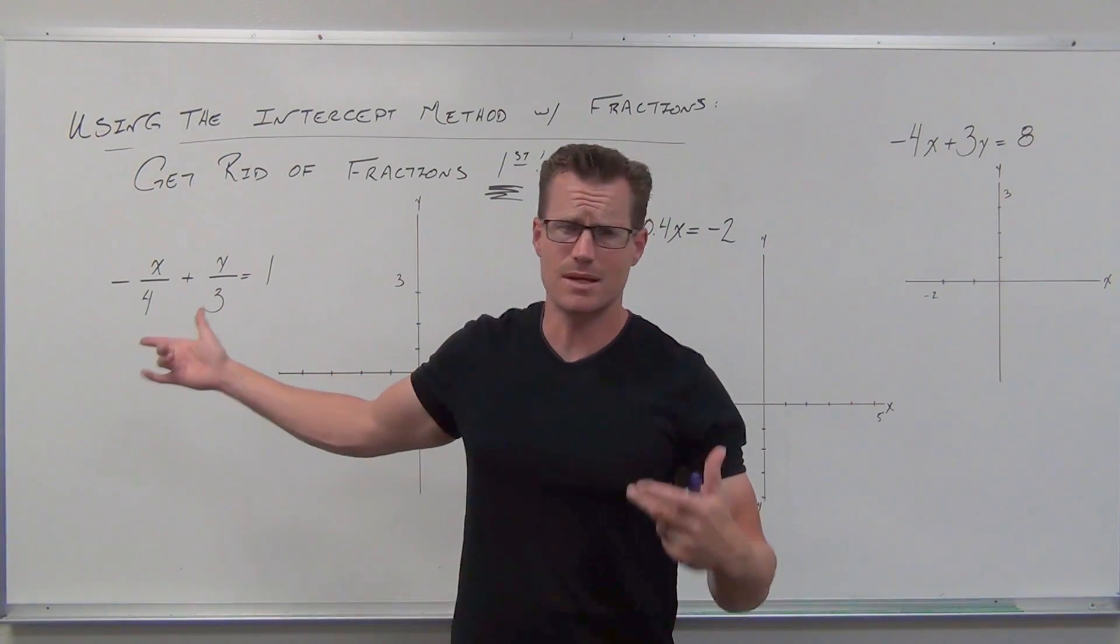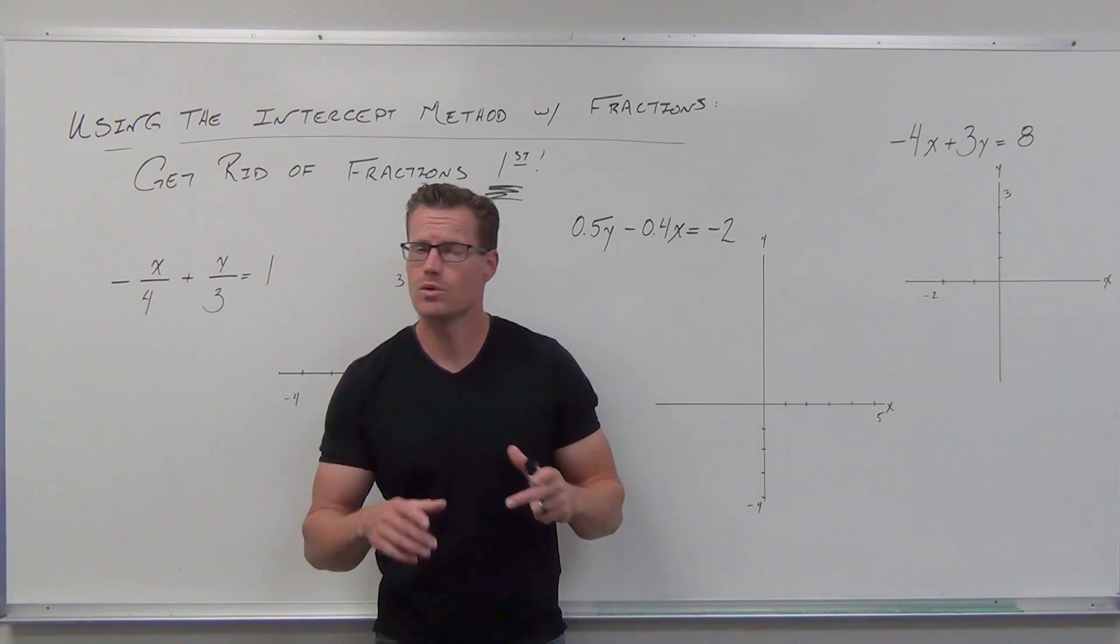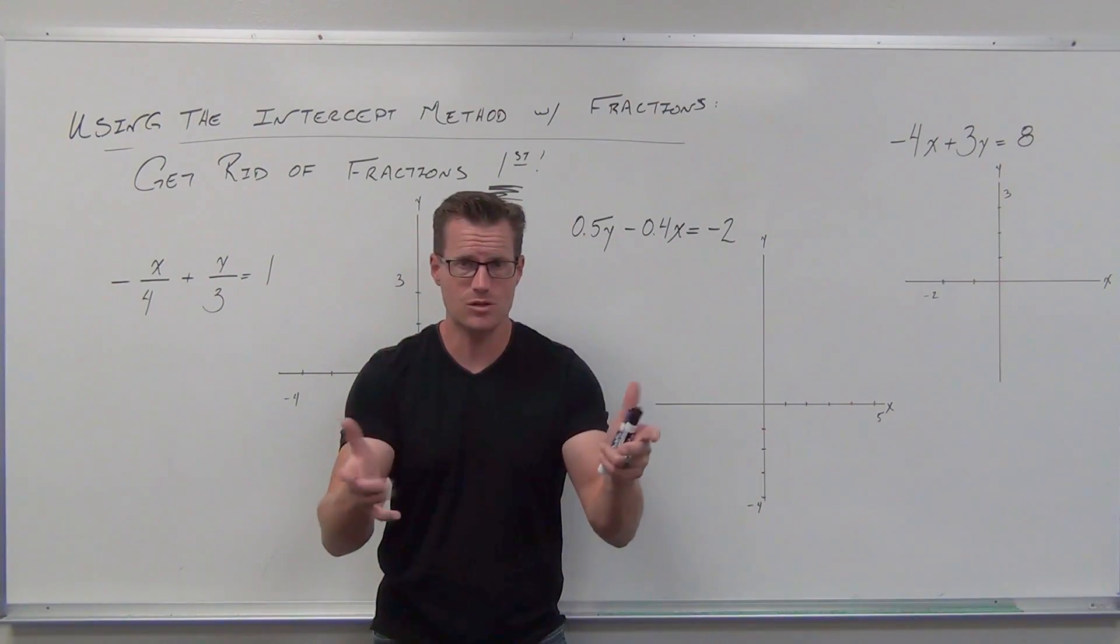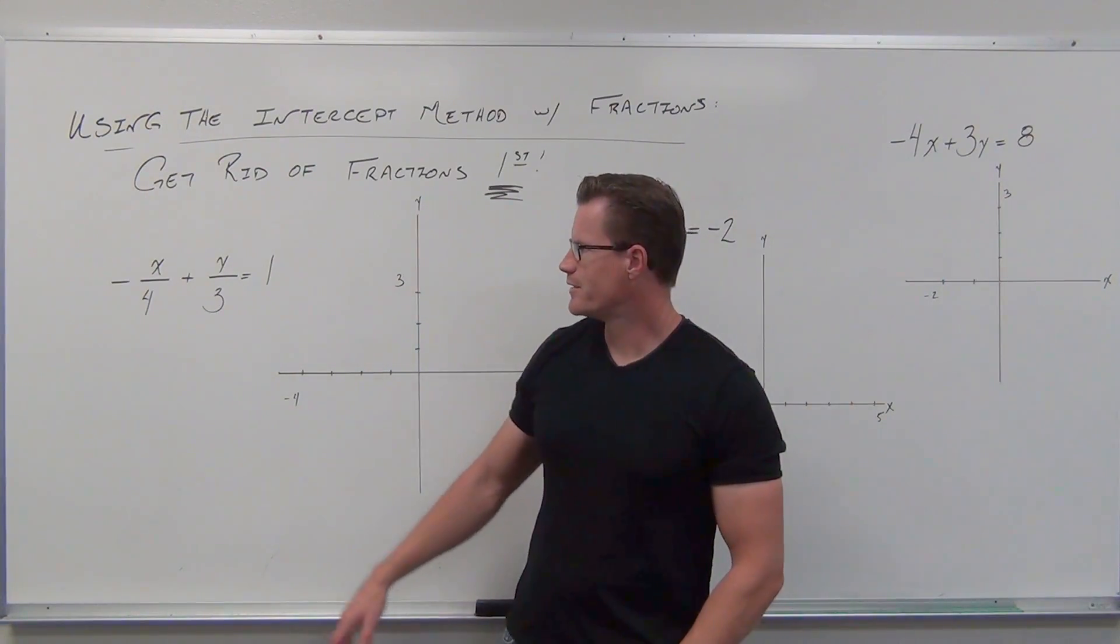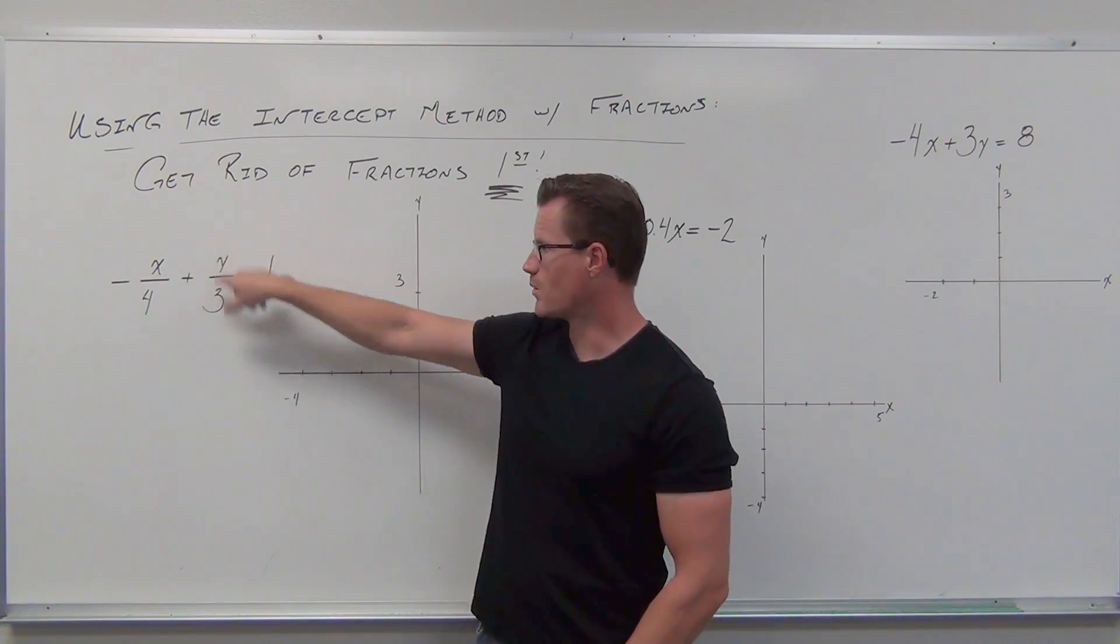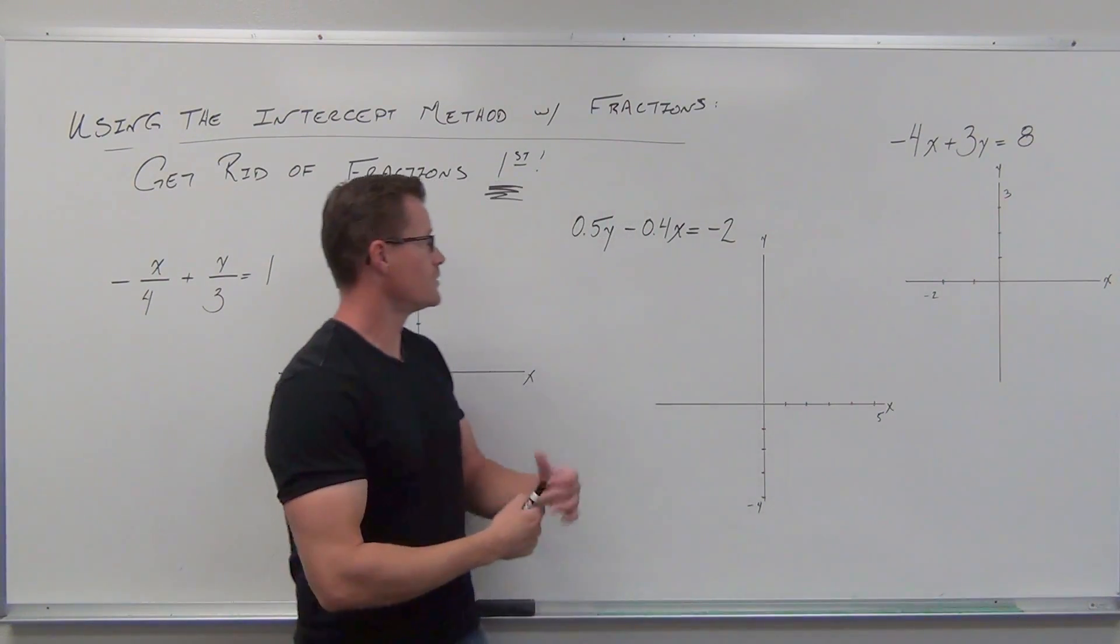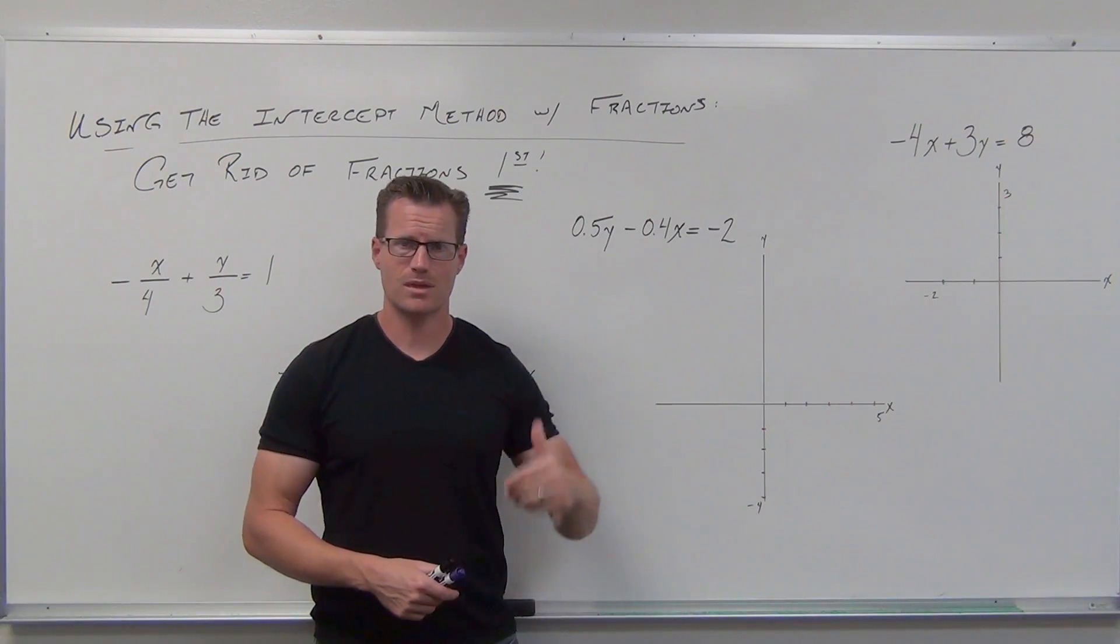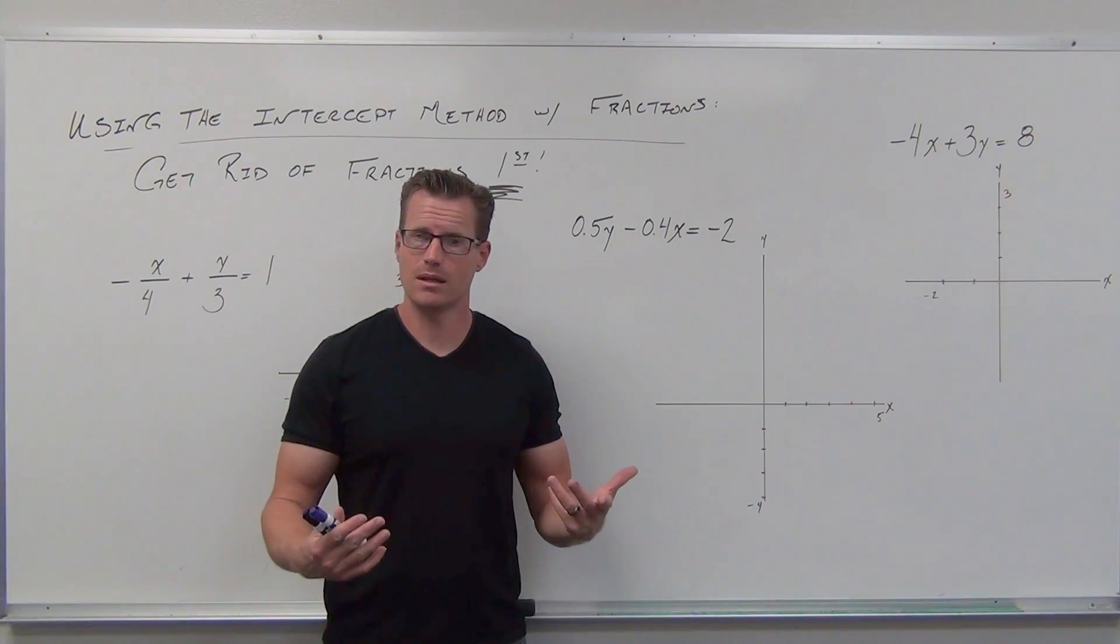You've got fractions, and they're nasty. And you've got decimals. Well, those are fractions, and it doesn't look great. Now, if you are okay with decimals and fractions, I always get asked this question, so I'm going to ask it and answer it myself. Can't you just use the cover-up method, Professor Lander, and get the same thing? Couldn't you just divide by negative one-fourth and divide by one-third and do the intercept method directly? Yes. Could you divide by 0.5 and divide by negative 0.4 and get the intercept method directly? Yes. And if you're comfortable with that, fine. Do it. I don't care. I'm just trying to make it a little easier for you.